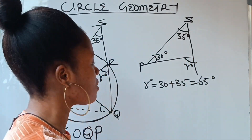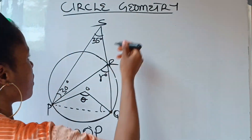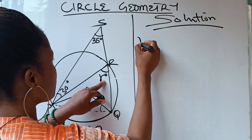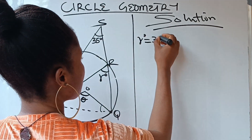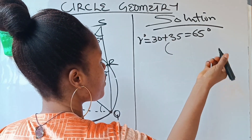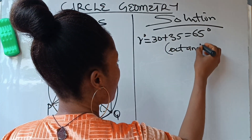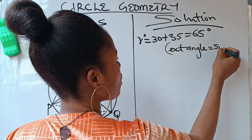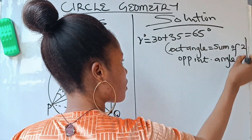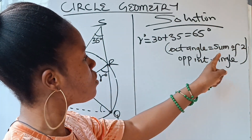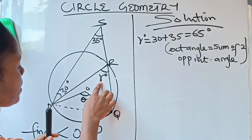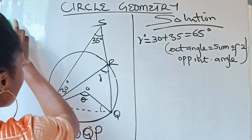So our solution: r equals 30 plus 35, which equals 65 degrees. The reason is that the exterior angle equals the sum of the two opposite interior angles. So our r is 65 degrees.